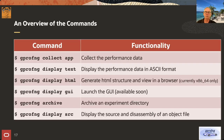We currently have five tools available, with a sixth one coming. There's 'collect app' to collect performance data, 'display text' to display it in ASCII format, a way to generate an HTML structure so you can use your regular browser to navigate the data (not yet available for ARM, but works for Intel and AMD), a GUI we're working to release soon, and an archiving command, plus a command to look at source code interleaved with instructions.